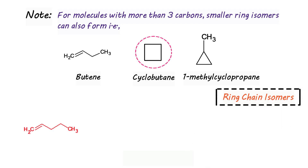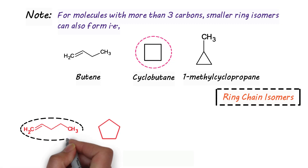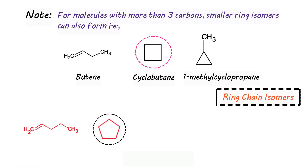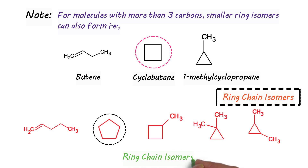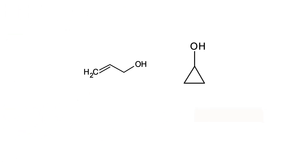In the same way, talking about pentene, its cyclic isomer will be cyclopentane. As there are more than three carbons in cyclopentane — that's five — smaller rings can also form. For example: 1-methylcyclobutane, 1,1-dimethylcyclopropane, or 1,2-dimethylcyclopropane. All these molecules are ring-chain isomers of each other, though the last two isomers are also position isomers.